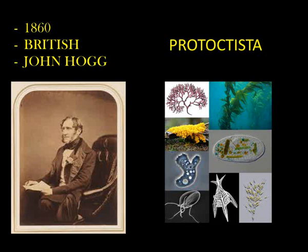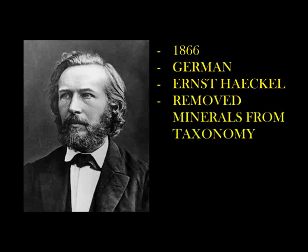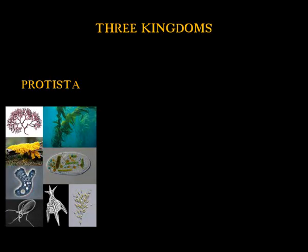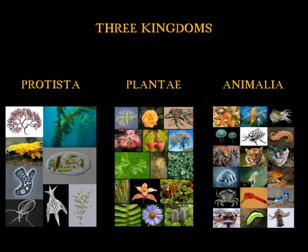In 1860, the British John Hogg created the fourth kingdom of nature, Protozoa, which included what he saw as primitive unicellular forms of both plants and animals. Finally, in 1866, the German Ernst Haeckel removed minerals from taxonomy, leaving the classification with three kingdoms: Protista (primitive forms), Plantae, and Animalia.